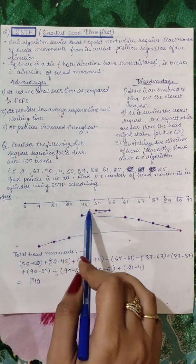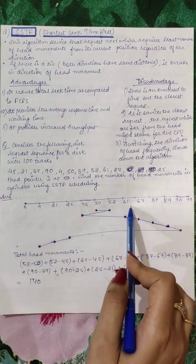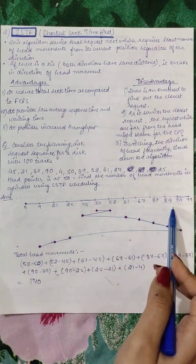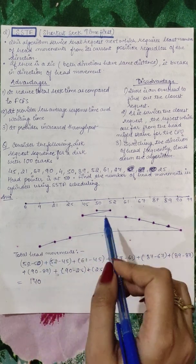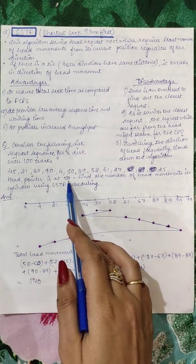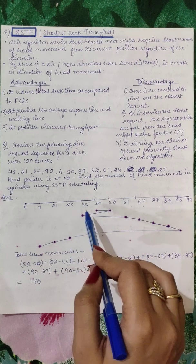4, 21, 25, 45, 50, 52, 61, 67, 87, 89, and 94. Next, my head pointer is located at 50, so we will start with 50.